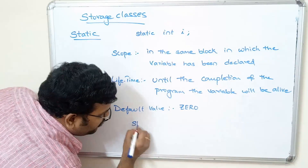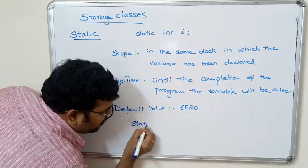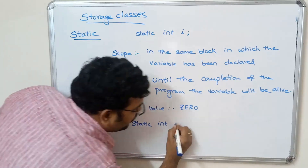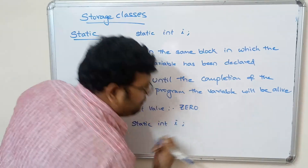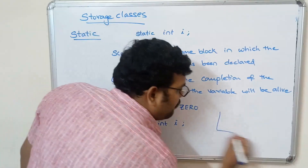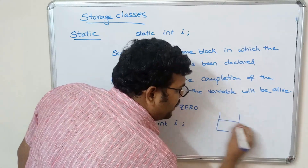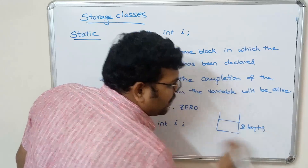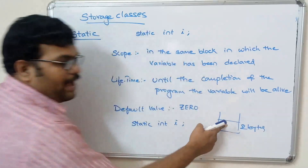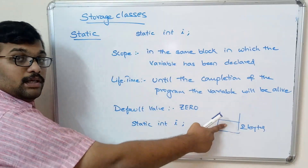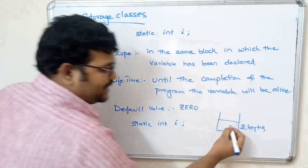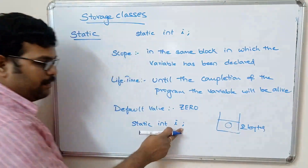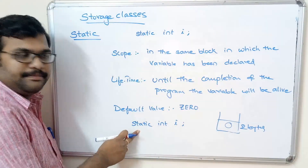The default value of a static variable is zero — not a garbage value. So if you declare static int i, two bytes of memory are allocated and the value in that memory location is zero.